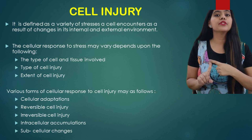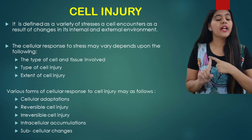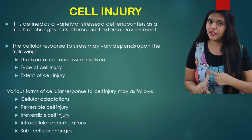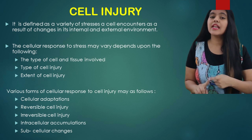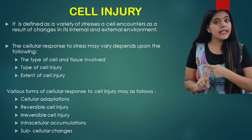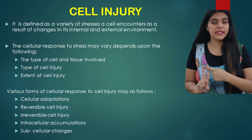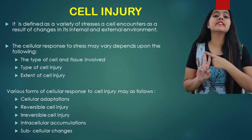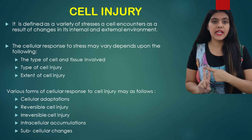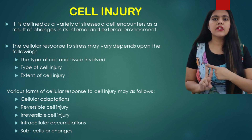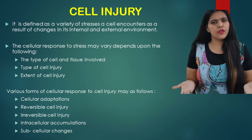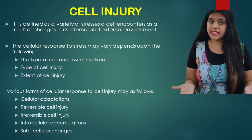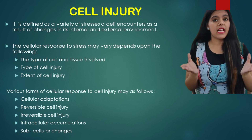Atrophy can occur due to the loss of endocrinal stimulation or arteriosclerosis. The second form is hypertrophy — that is, the increase in the size and the number of cells — either due to physiological conditions like pregnancy, where there is enlargement of the uterus, or pathological conditions like pyloric stenosis in the stomach.